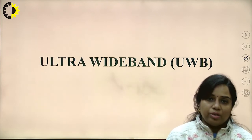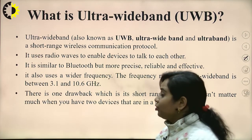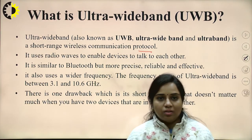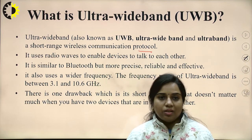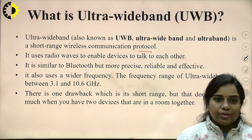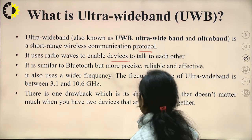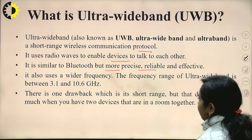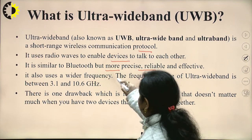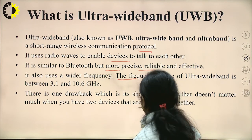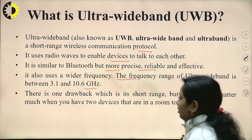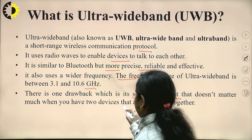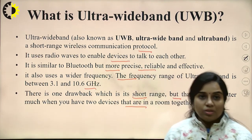The next topic is Ultra Wideband, or UWB. UWB is a short-range wireless communication protocol. Li-Fi is also a short-range wireless communication because it provides connectivity only within a single room and cannot provide connections outside the room. UWB uses radio waves to enable devices to talk to each other. It is similar to Bluetooth, but more precise, reliable, and effective. It uses a wider frequency range. The frequency range of UWB is between 3.1 to 10.6 GHz. One drawback is its short range, but that does not matter much when two devices are in the same room.